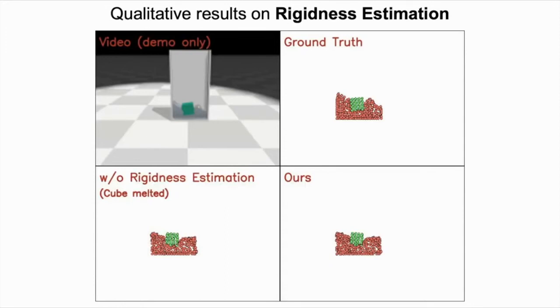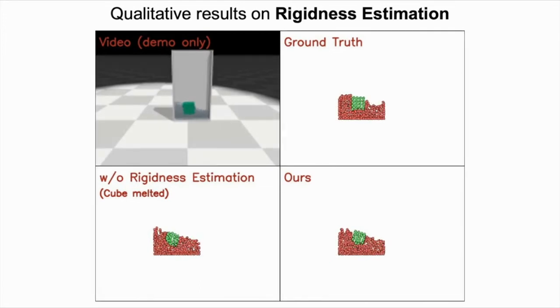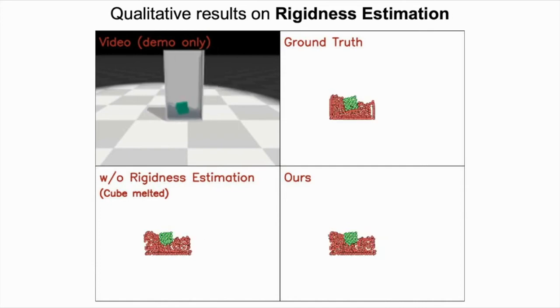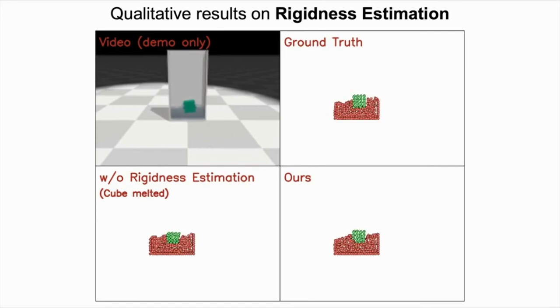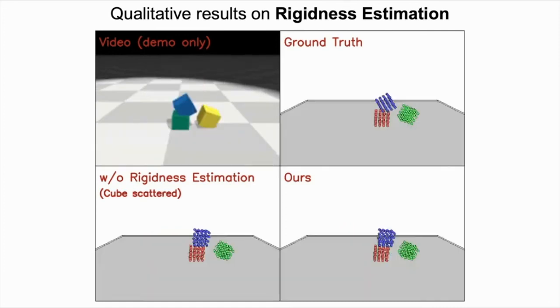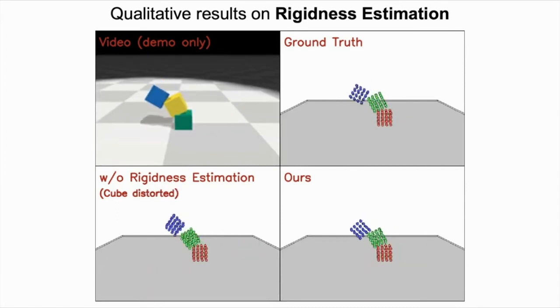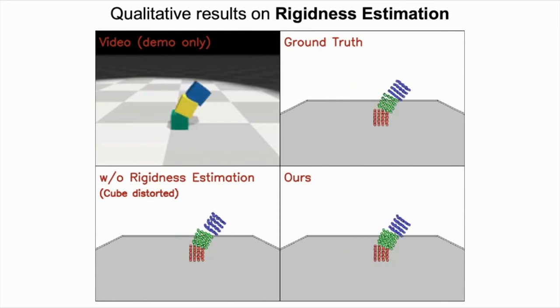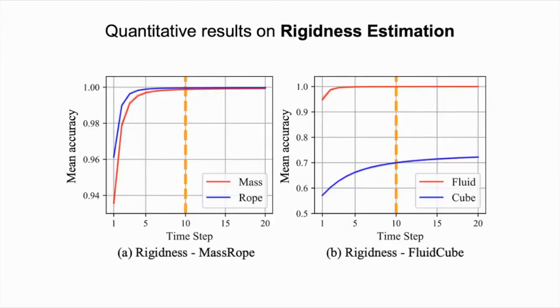We first show the results on predicting the particle positions after 20 time steps. Here, we compare the ground truth with the results of our model, together with the version without rigidness estimation. From the video, we can see that without proper estimation of the rigidness, the rigid cube melts into the fluid. In the box falling environment, the rigid cubes will scatter or distort.